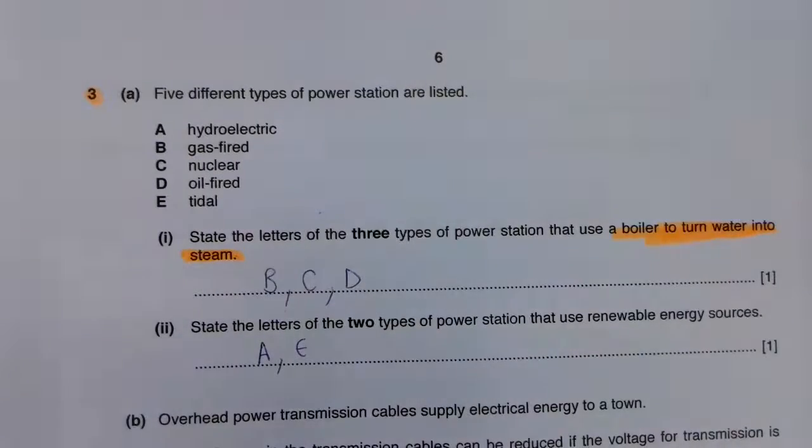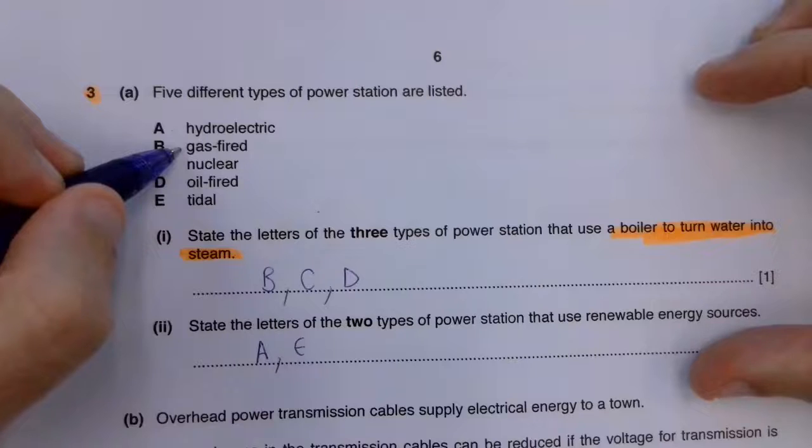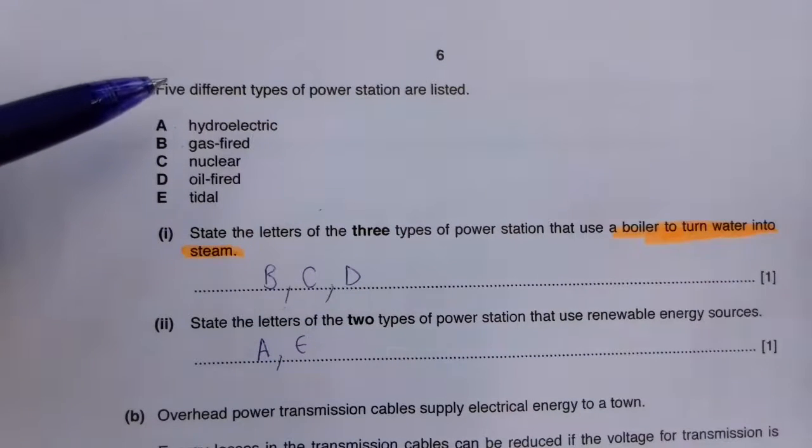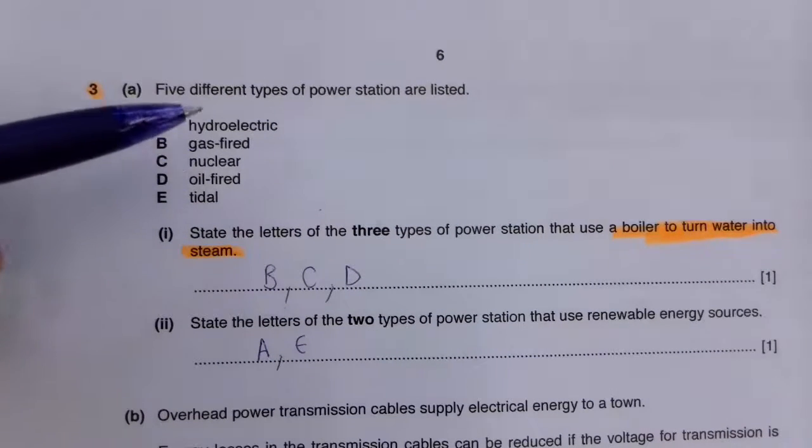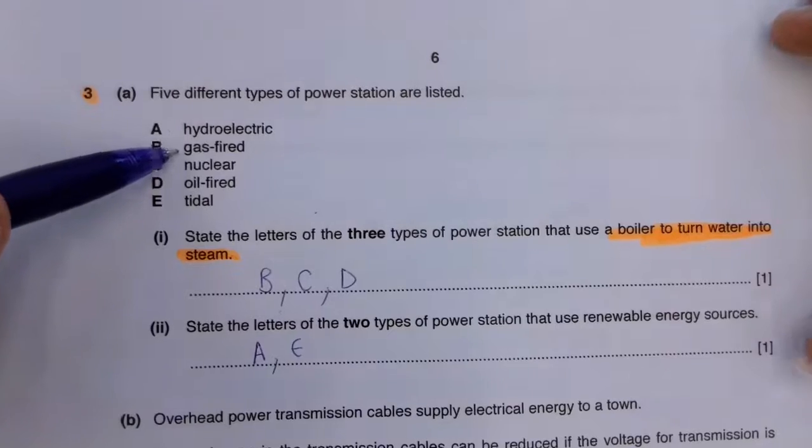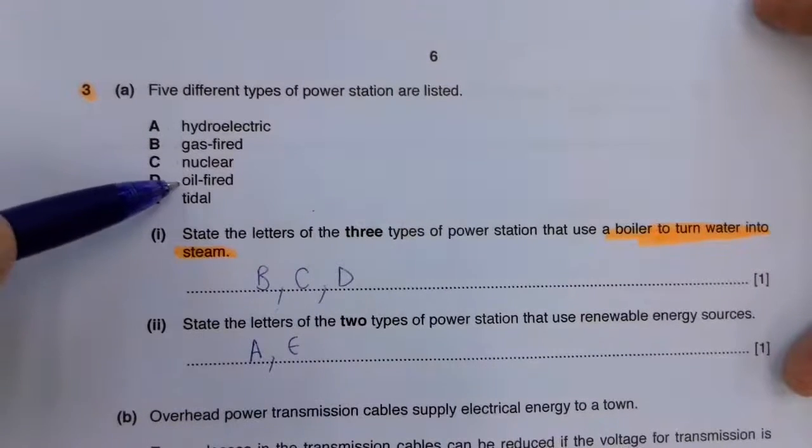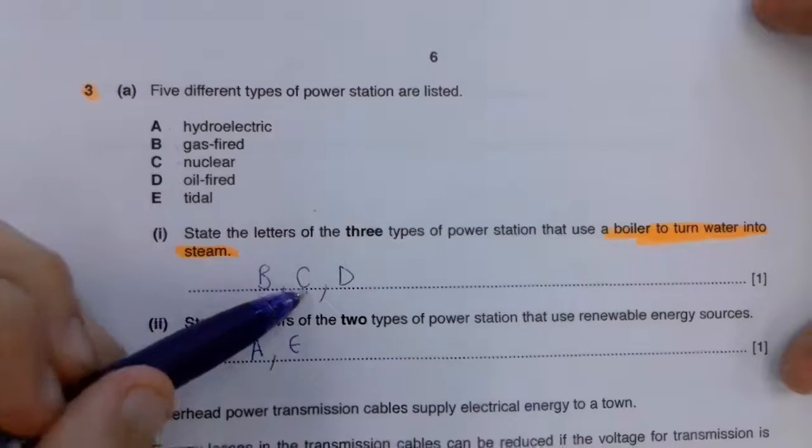Well, in gas-fired one, you should be aware of the fact that we can use that gas to heat. We can burn the gas, get the energy out of there, cause it to heat water and that can rise. Similar with nuclear and oil. So that is B, C and D.